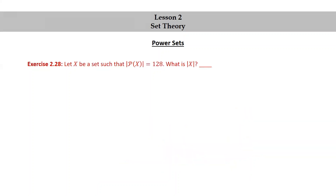Let's try one more exercise. Let x be a set such that the cardinality of the power set of x is 128. What is the cardinality of x? Go ahead and pause this video, think about this question, and come up with your own answer, then resume the video to check. Well, 128 can be written as 2 to the 7th, so the cardinality of x is 7.